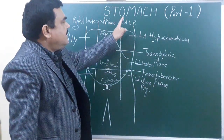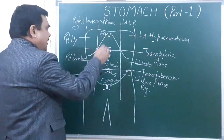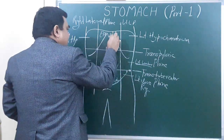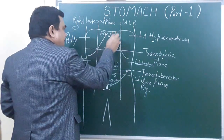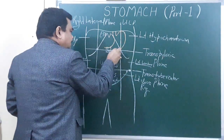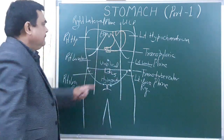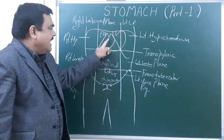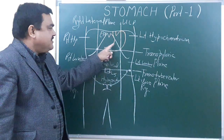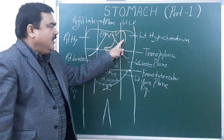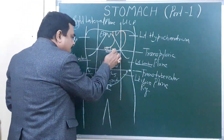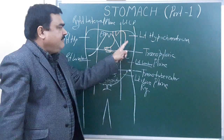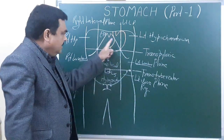Now let's discuss the position of the stomach. Here you can see the stomach lies here — this is the position of the esophagus, and this is the position of the stomach. The stomach lies in the epigastrium, the left hypochondrium, and it extends up to the umbilical region. So it is located in these three regions.